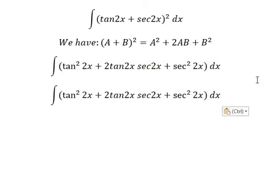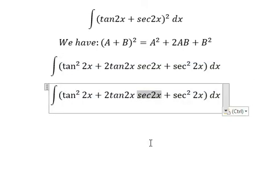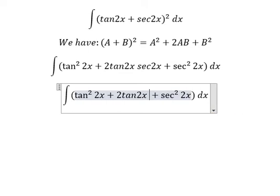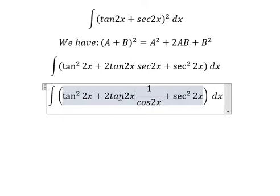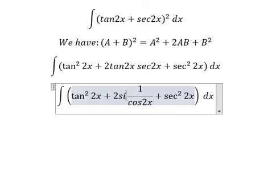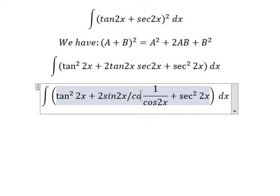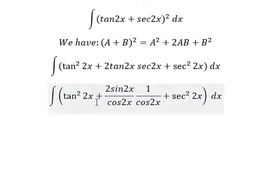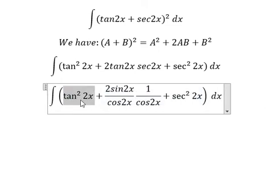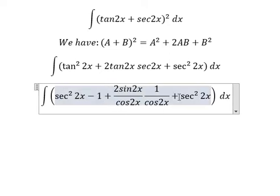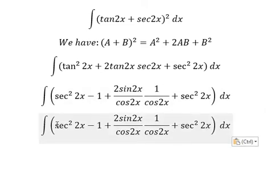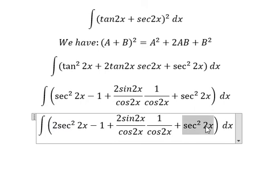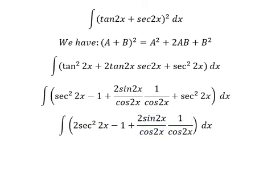Next, sec2x can be changed into 1/cos2x, and tan2x can be changed into sin2x/cos2x. This can be written as sec²2x - 1. Now we simplify sec²2x with this expression.